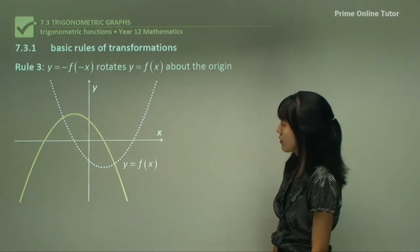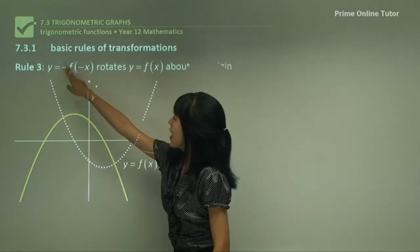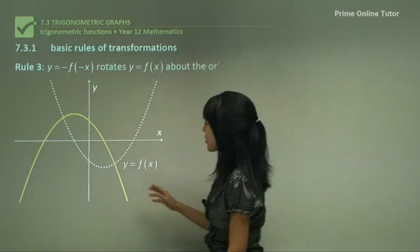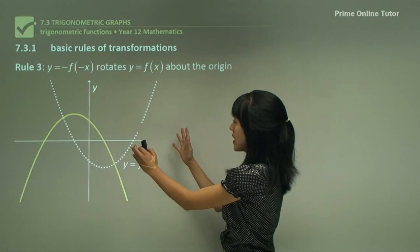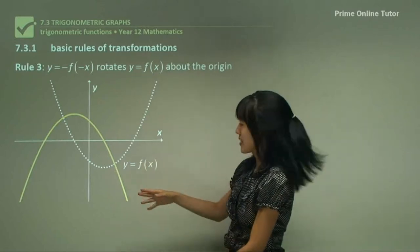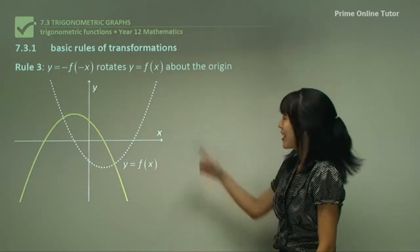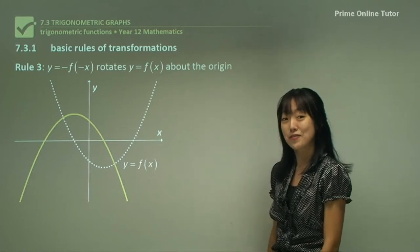You could also think of it as, well firstly consider f of negative x. Remember f of negative x would be rotated about the y-axis and then the negative would be rotated about the x-axis, which would give you the same graph. You could break it down into small steps if this first step is a little bit confusing.